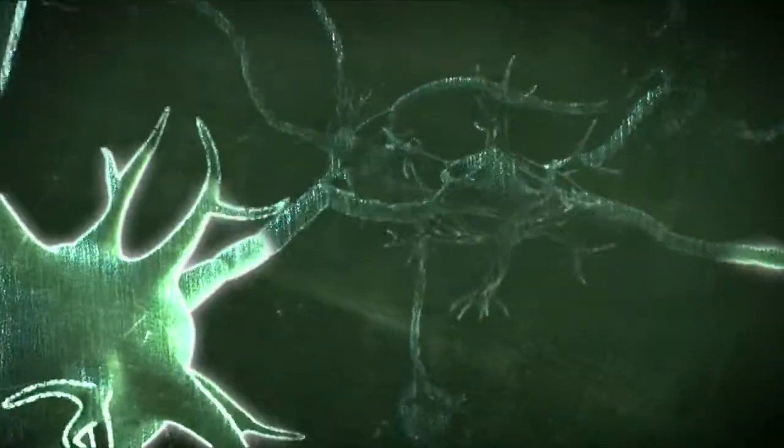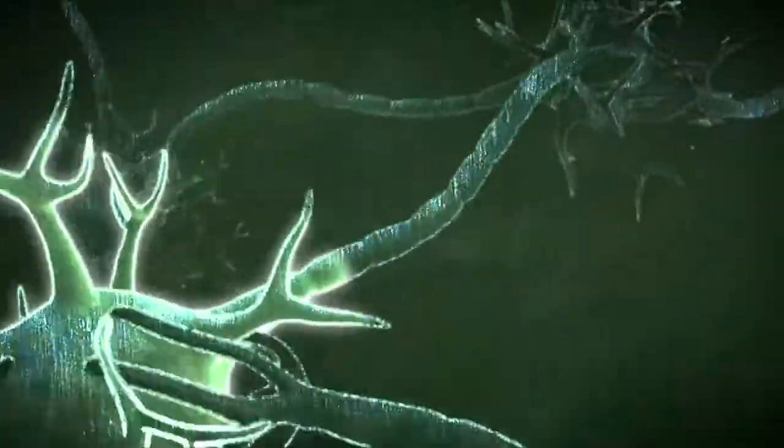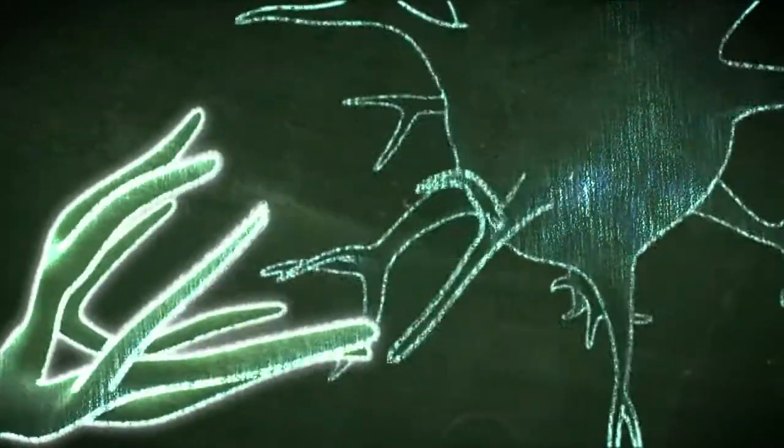During the first years of life, neuronal connections that determine the adult brain configuration are developing. These connections, if not stimulated during this very important stage in life, will die forever.